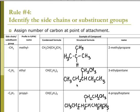For identifying side chains or substituent groups: if my longest chain is 3, I have a methyl group coming off the second carbon — 2-methylpropane. If my longest chain is 5, I have a pentane, and off the 3rd carbon I have an ethyl group — 3-ethylpentane.